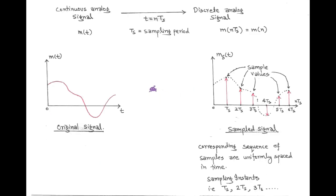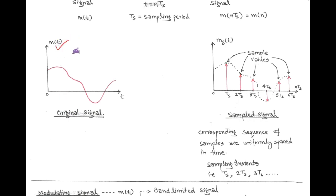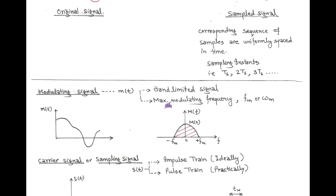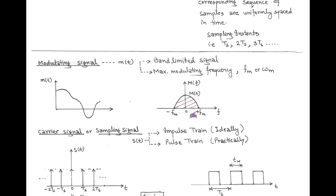To explain the sampling process, we consider any arbitrary message signal m(t), which is a continuous signal. Its sampled signal is denoted by m_delta(t). Both are analog signals — the only difference is in the time axis. In the original signal, time t is in continuous form, while in its sampled version, the corresponding sequence of samples are uniformly spaced in time at sampling instants Ts, 2Ts, 3Ts, with sample values corresponding to the amplitude of the original signal. We consider the modulating signal as a band-limited signal with fm as the maximum modulating frequency. So in the frequency domain, the message spectrum M(f) is band-limited between -fm to +fm with a bandwidth of fm.